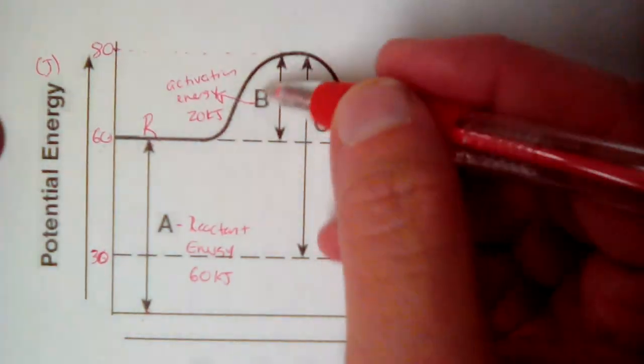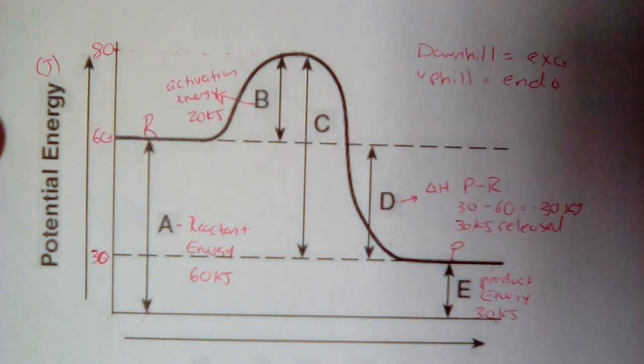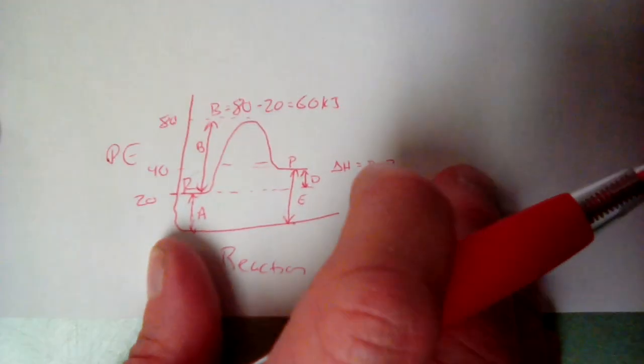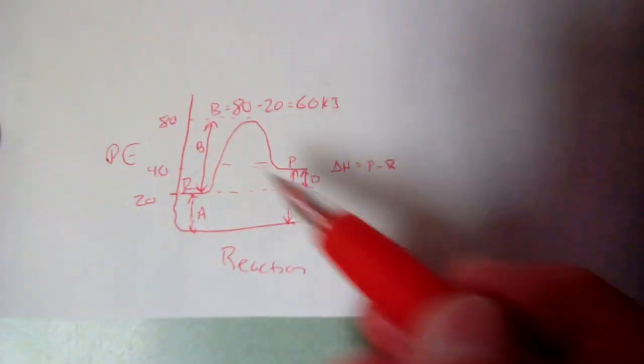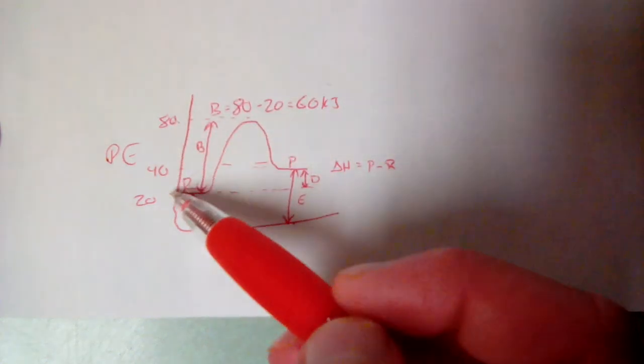And up here it was only 20, because this is exothermic. And the activation energies are lower in exothermic reactions. Here it's a much bigger number, but I still find it the same way, peak minus reactants.